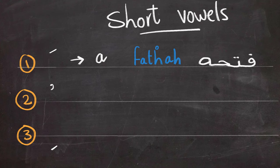The second short vowel looks like a small Waw in Arabic, and it gives the sound of O or U. And this symbol is called Domm.